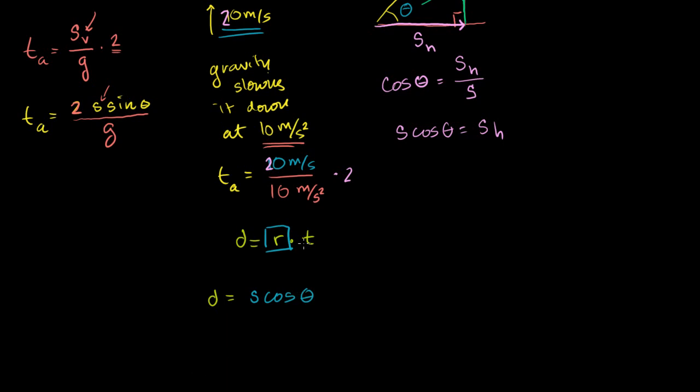And how long will we be traveling at this horizontal speed? Well, we'll be going at that speed as long as we are in the air. How long are we in the air? We figured that out in the last video. We're going to be in the air this long: 2s sine of theta divided by g. So the time is going to be 2s sine theta over g.